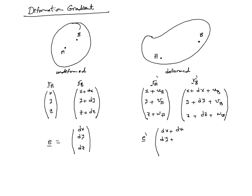In the deformed configuration, the vector will change to dx plus dU, dy plus dV, and dz plus dW. So we now have two vectors: a vector that describes the relative position of two material points in the deformed configuration, and the corresponding vector in the undeformed configuration. The relationship between these two vectors is the deformation gradient.